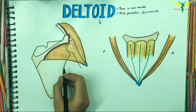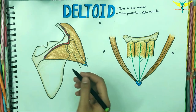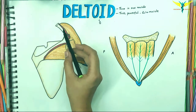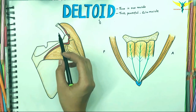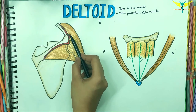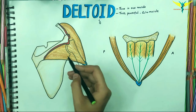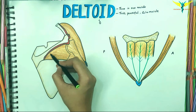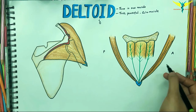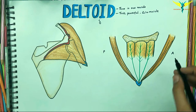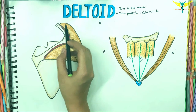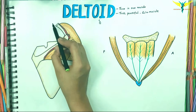Coming to the origin of the deltoid, the deltoid has a V-shaped origin from the subcutaneous bony arch formed by the lateral one-third of the clavicle, from the acromion process, and the remaining from the crest of the spine of the scapula. The anterior unipinnate part arises from the upper surface of the anterior border of the lateral third of the clavicle.